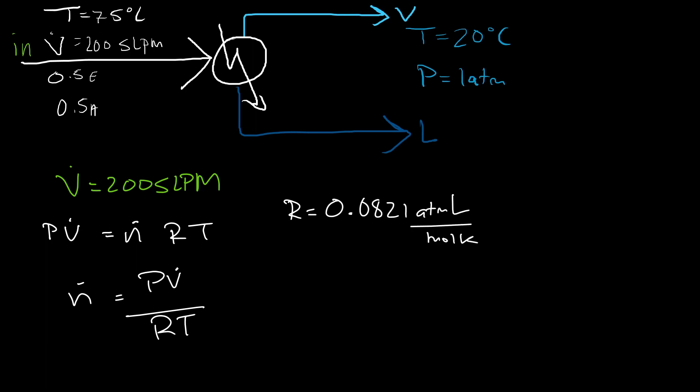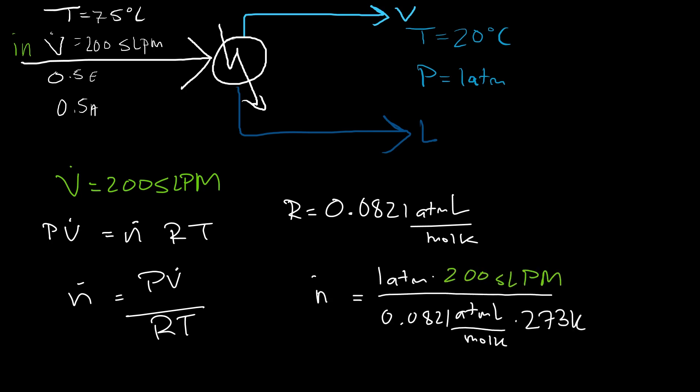To minimize unit conversions, instead of 8.314 J/mol·K, let's use R = 0.0821 atm·L/mol·K since we're working in atmospheres and liters. Plugging in: pressure = 1 atm, temperature = 273 K, with the ideal gas constant and the volumetric flow rate of 200 L/min, we get a molar flow rate of 8.92 moles per minute.